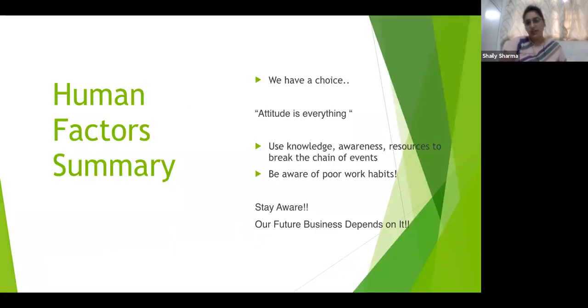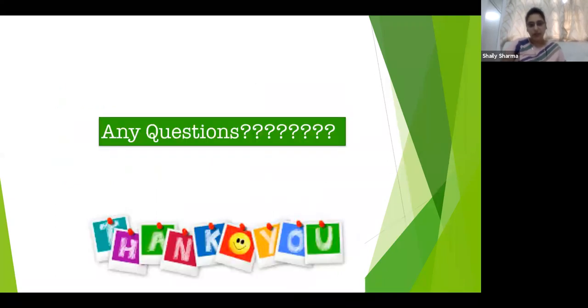We have a choice. Attitude matters. Attitude is everything. Use knowledge, awareness. Break the chain of events. Be aware of poor work habits. Stay aware. Our future business is on it. So basically human factor is social and personal skills. This is basically the issue affecting how people do their jobs. This is the last slide of mine. Now, any questions?